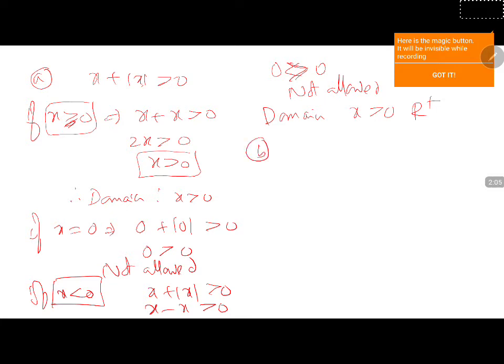Let me take part b: 1 by root of x minus mod x. Now, for the domain we need x minus mod x greater than 0. This is condition 2.